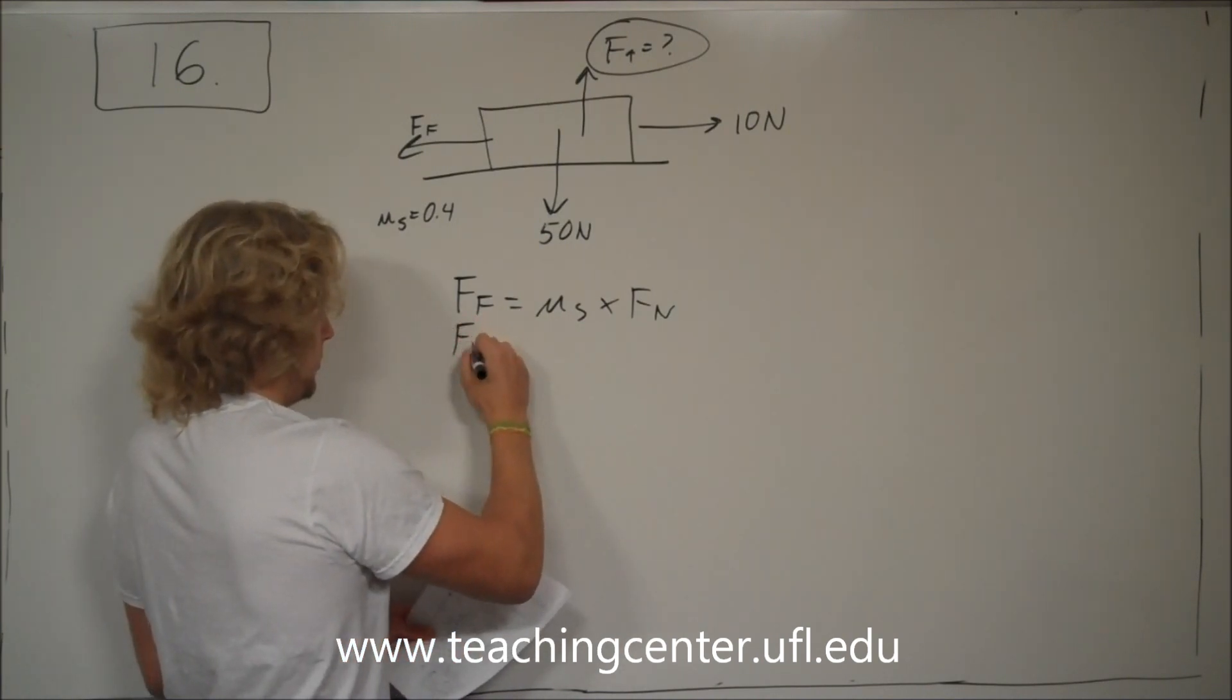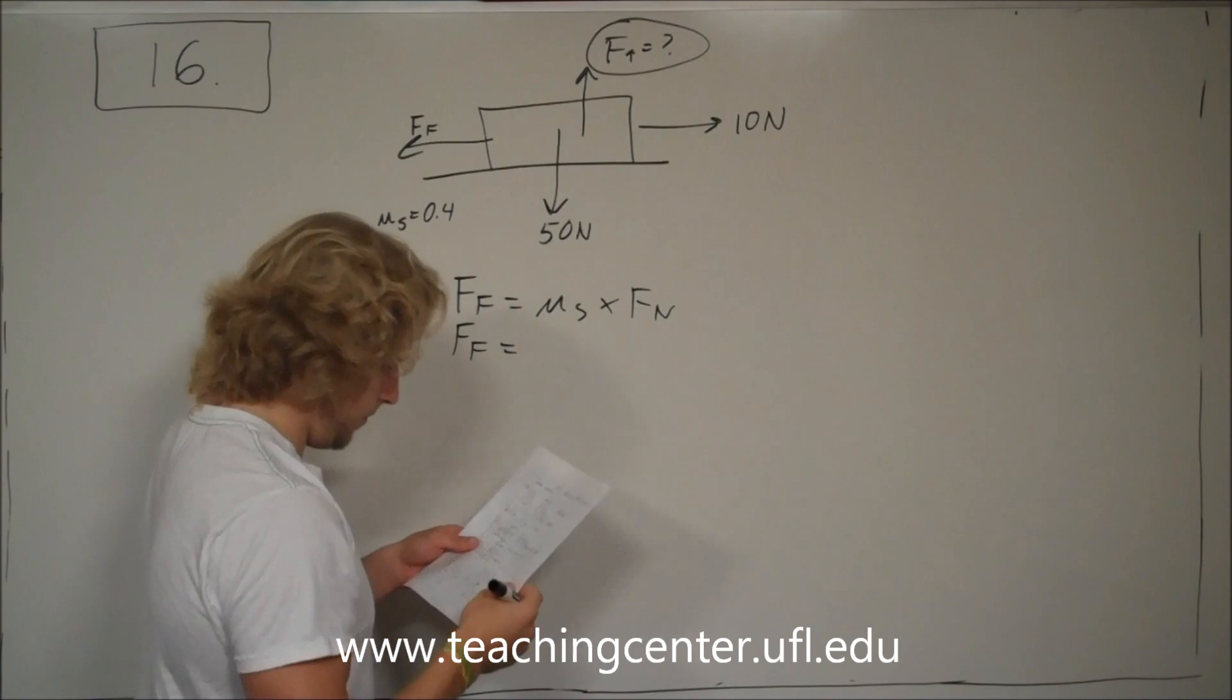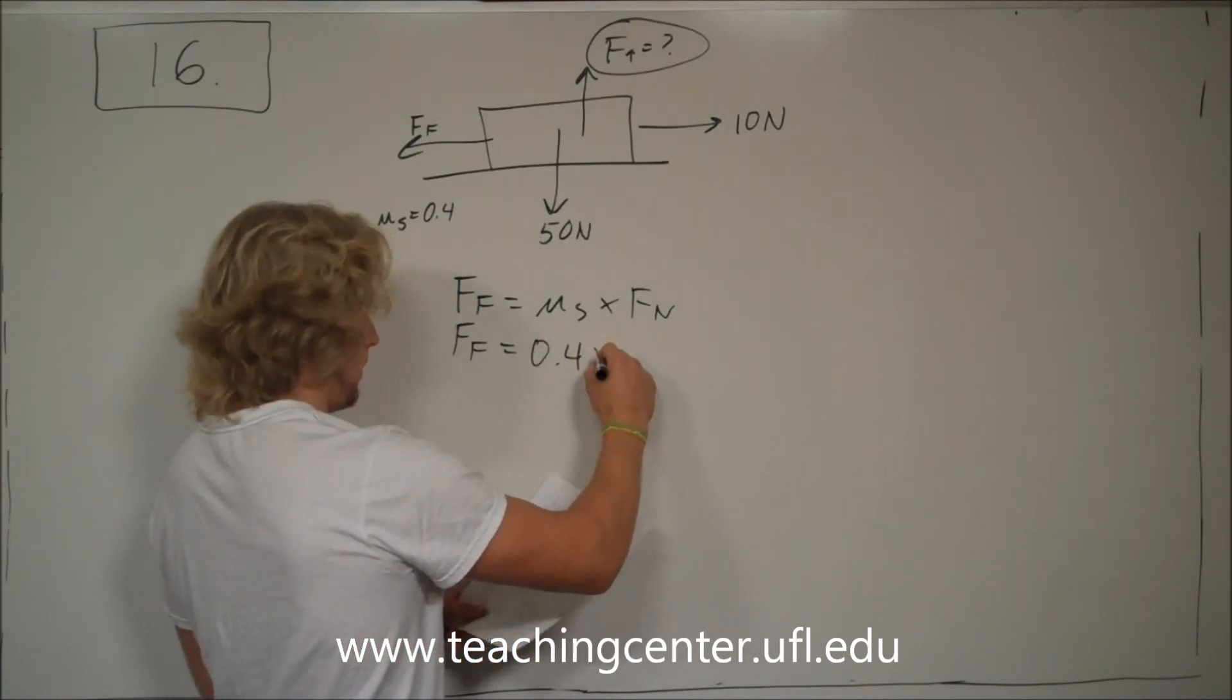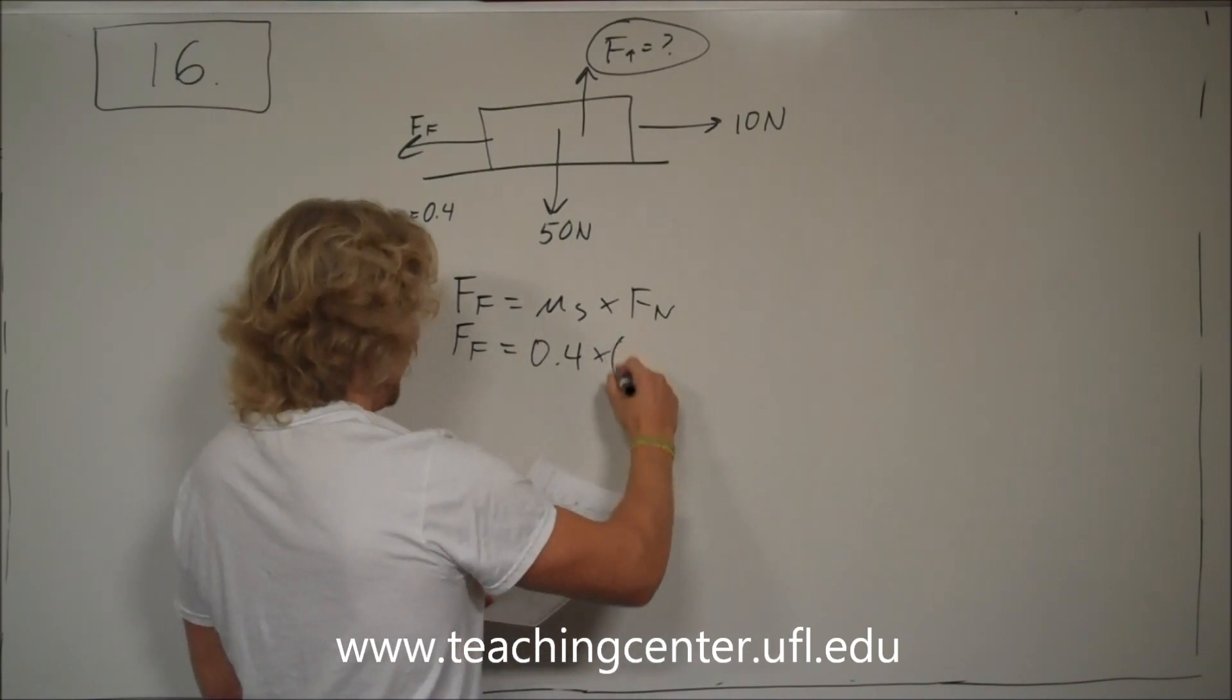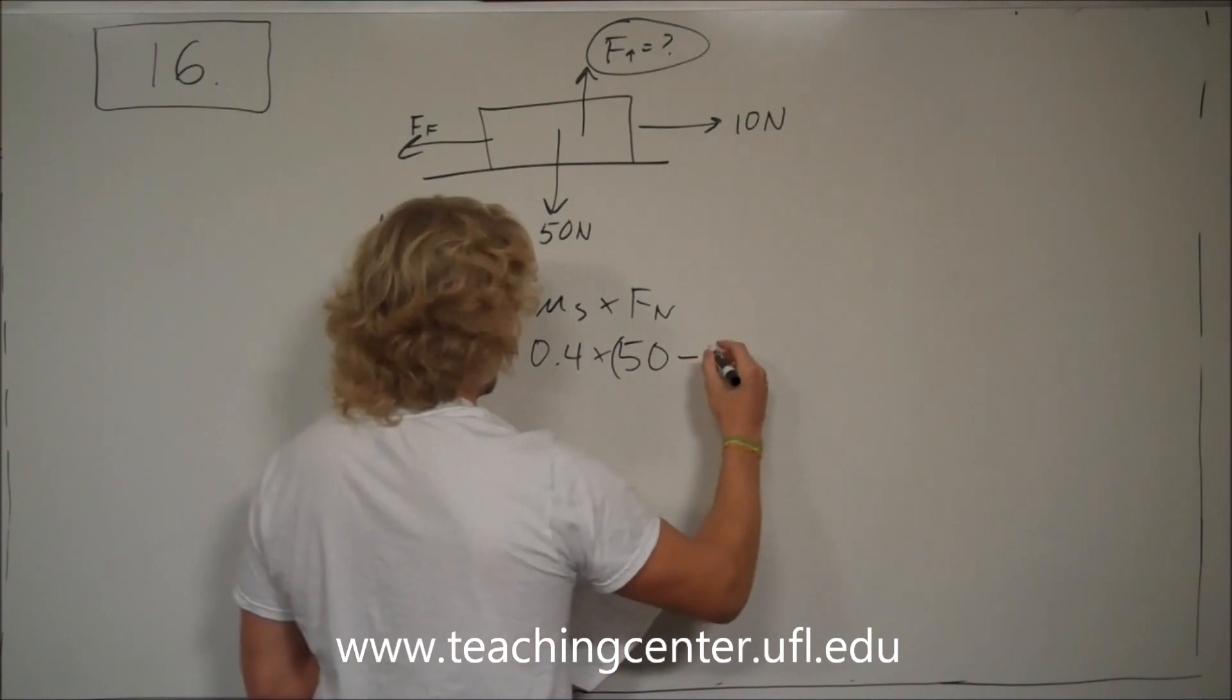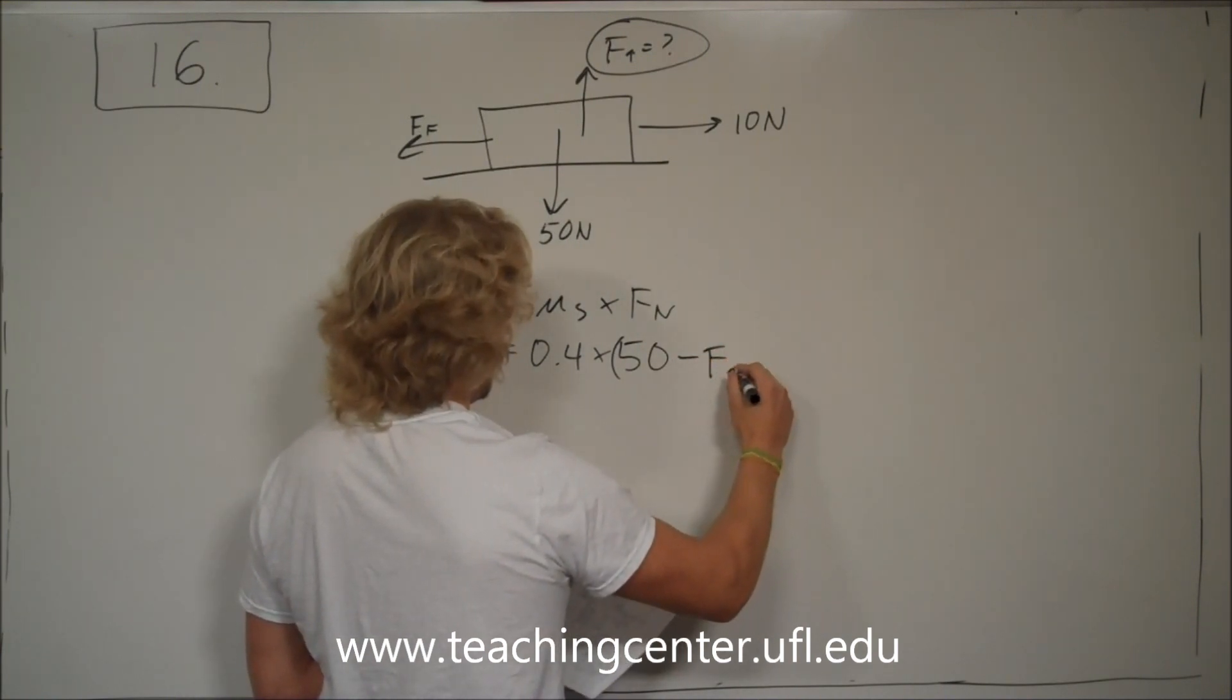So frictional force is equal to 0.4 times, and we have 50 newtons being brought down, minus the force that goes up.